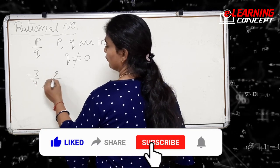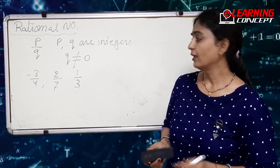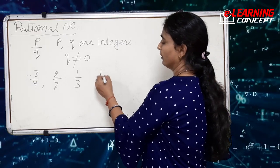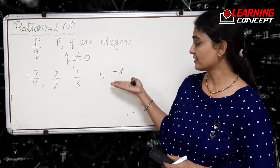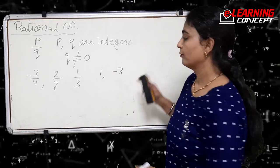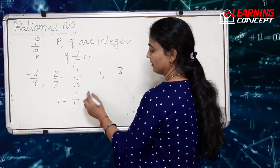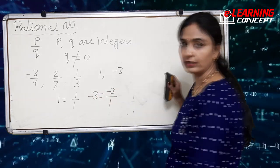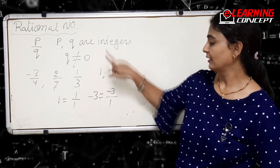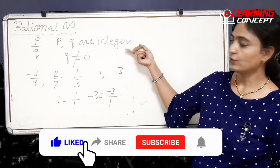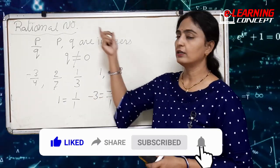For example, minus three by four, two by seven, and one by three are all rational numbers. If you take any two integers like one and minus three, these are also rational numbers, because one can be written as one by one and minus three can be written as minus three by one. Here both numerator and denominator are integers. So all positive and all negative integers are rational numbers.